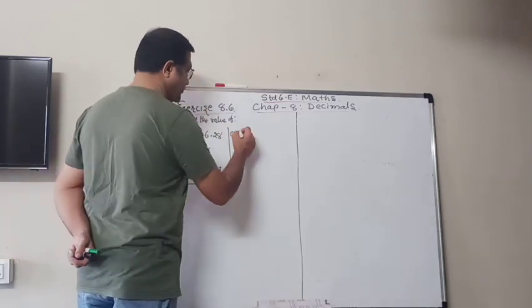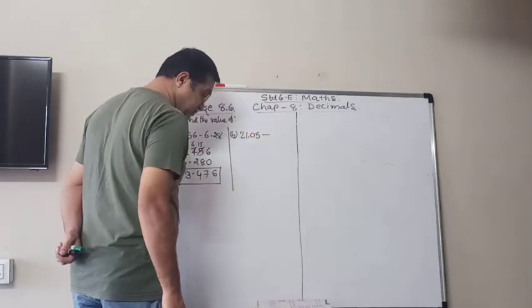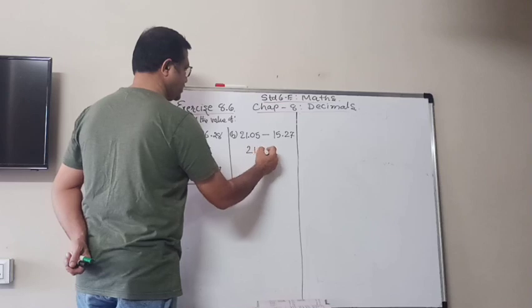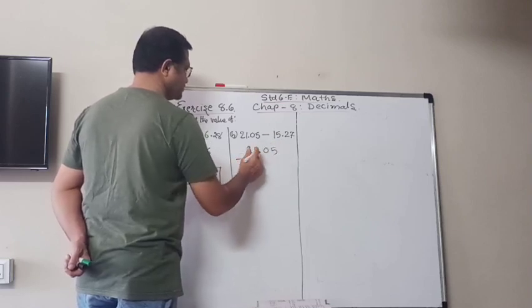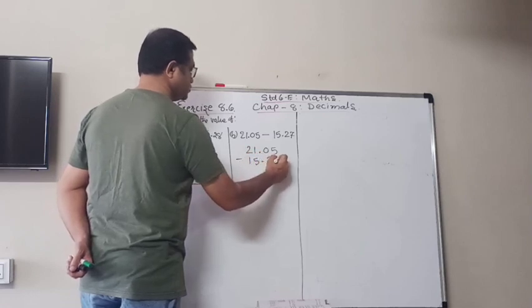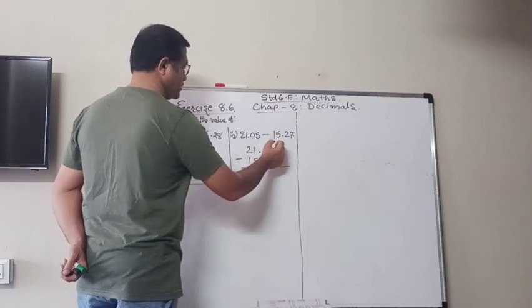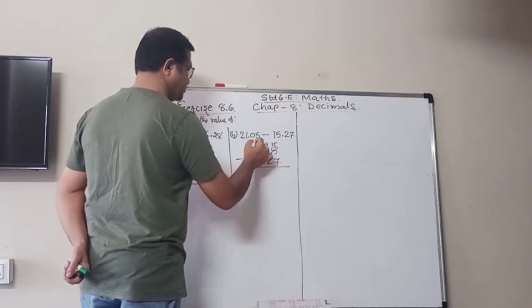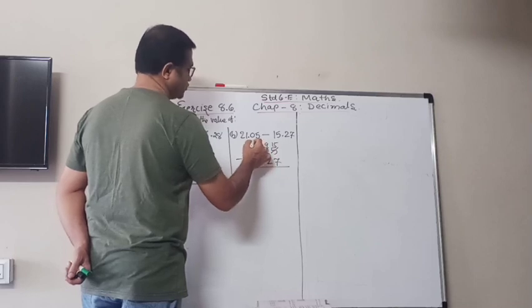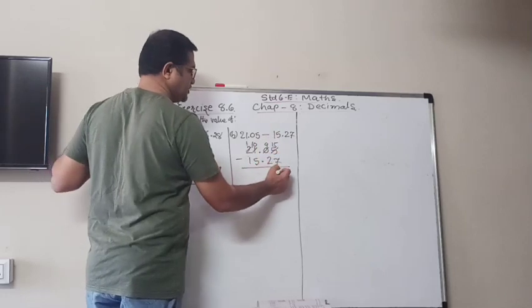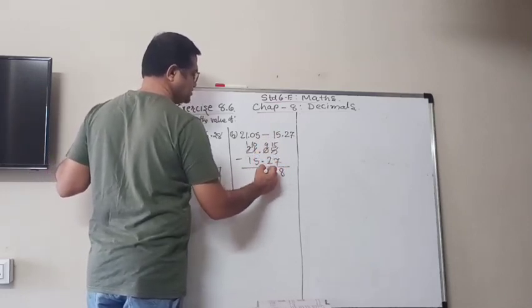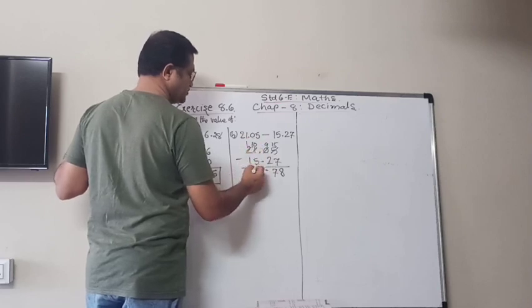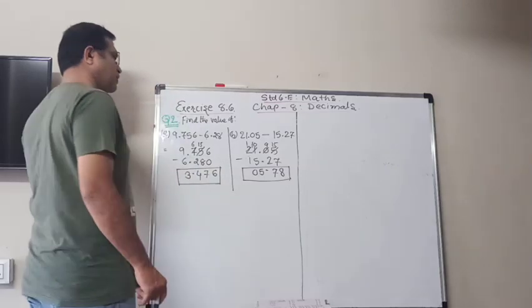B, 21.05 minus 15.27. So 21.05 minus 15.27. So here 15, so here it will be 9, and here it will be also 0, so 10, and here 1. So 15 minus 7 is 8, 9 minus 2 is 7, 10 minus 5 is 5, and 1 minus 1 is 0. So your answer is 5.78.